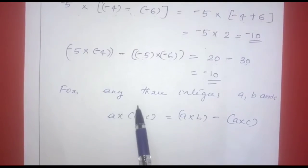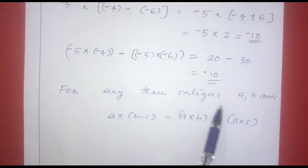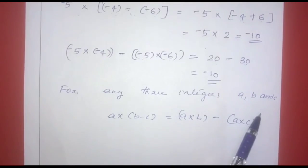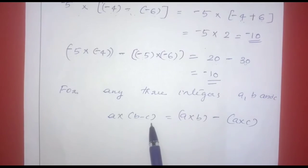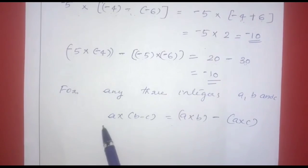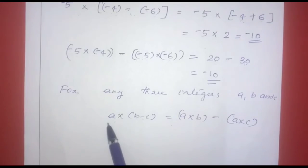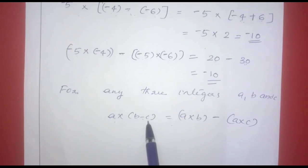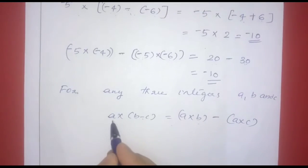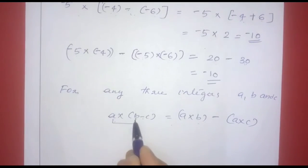In general, for any three integers a, b, and c: a into (b minus c) is equal to a into b minus a into c.